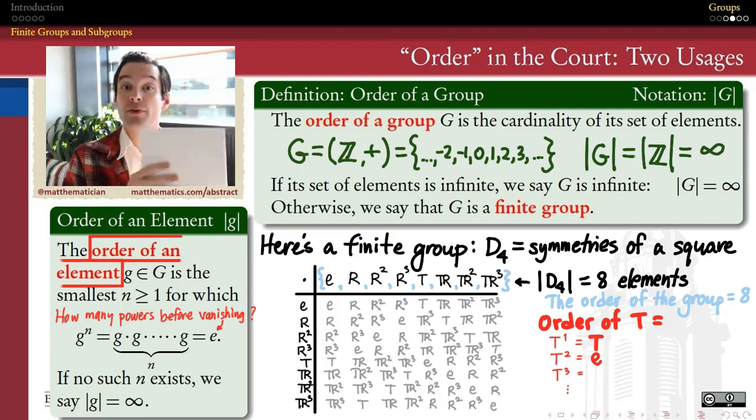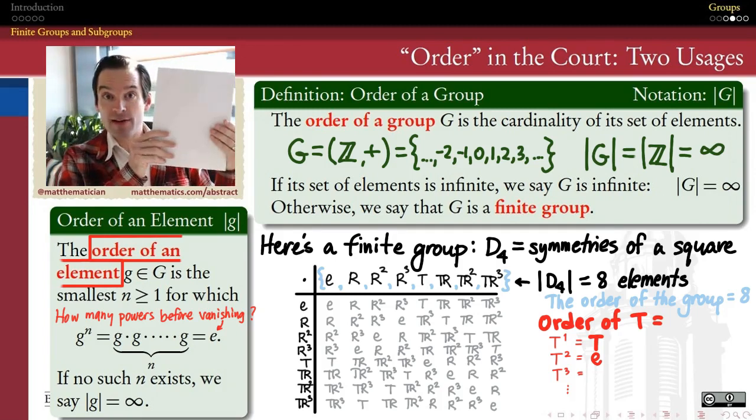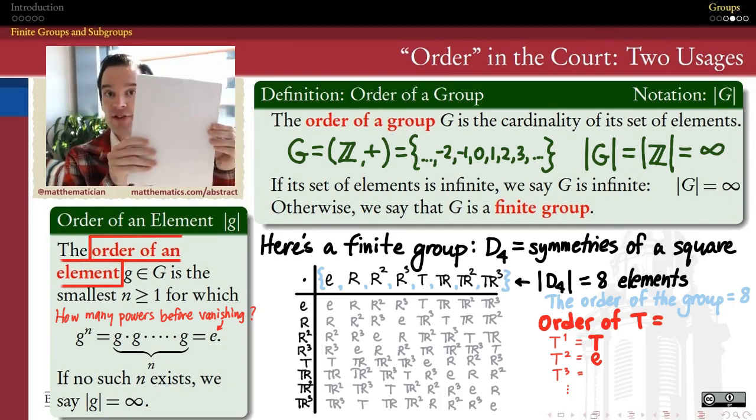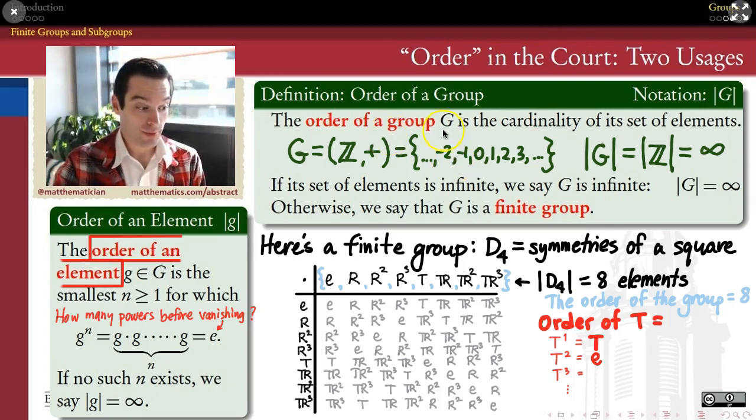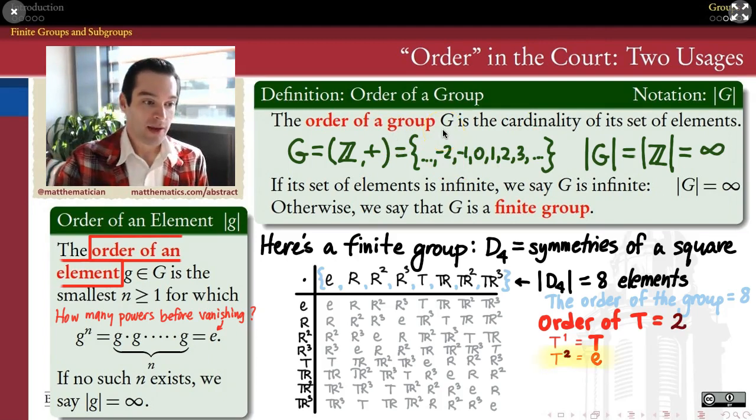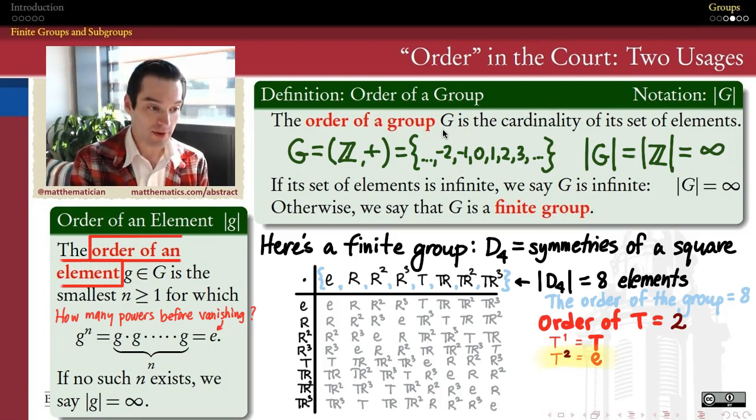If you think about why that is, we're talking about a reflection. If I reflect something, and then I apply that same reflection again, I get exactly back to where I started. So the order of the element t in this group is the first power of it in which it becomes the identity. And that's 2. So the order of the element t in this group is 2.